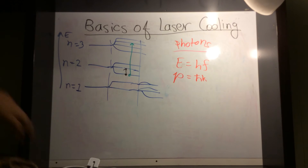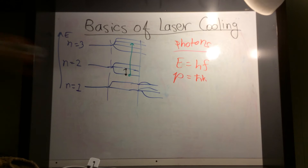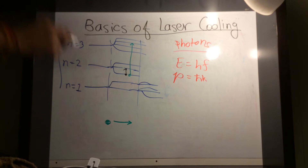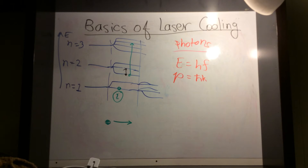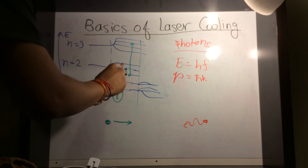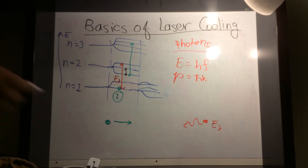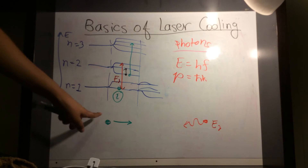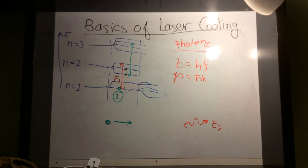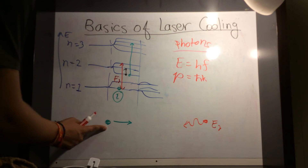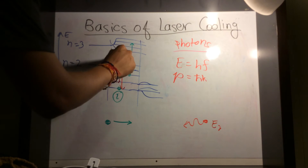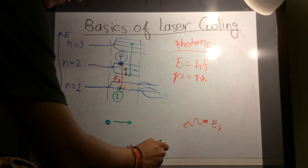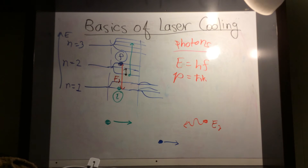Now think about this scenario. Say you have a particle traveling that way, and it's currently in its initial state. Then you send a photon from the other side with energy E-gamma — just enough energy to kick the atom from this state to that higher state. This photon gets absorbed by the atom, and the atom ends up in that higher excited state. So here is the final atom with its final velocity, now in the excited state.